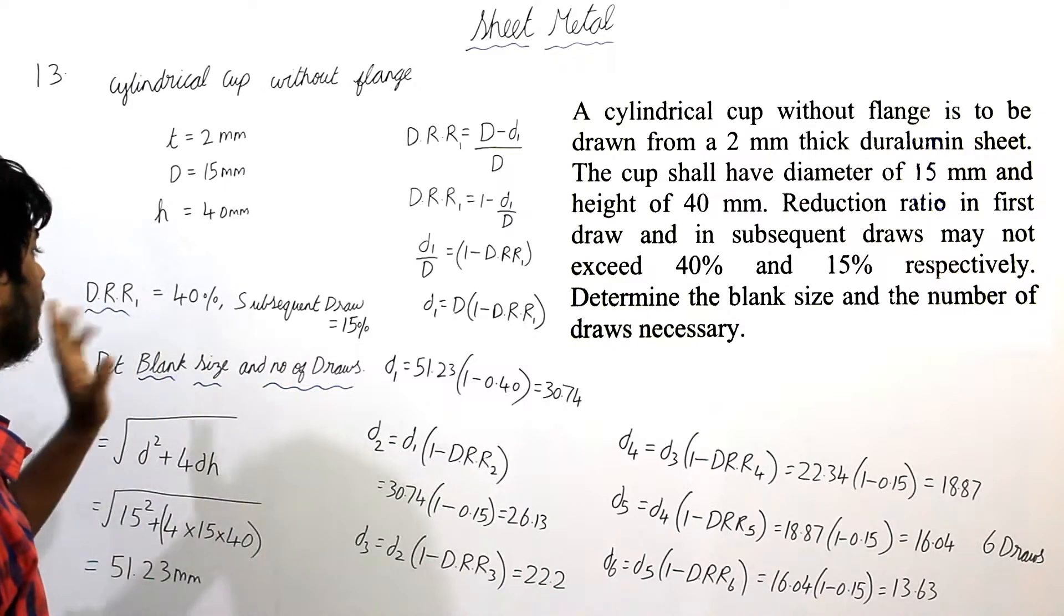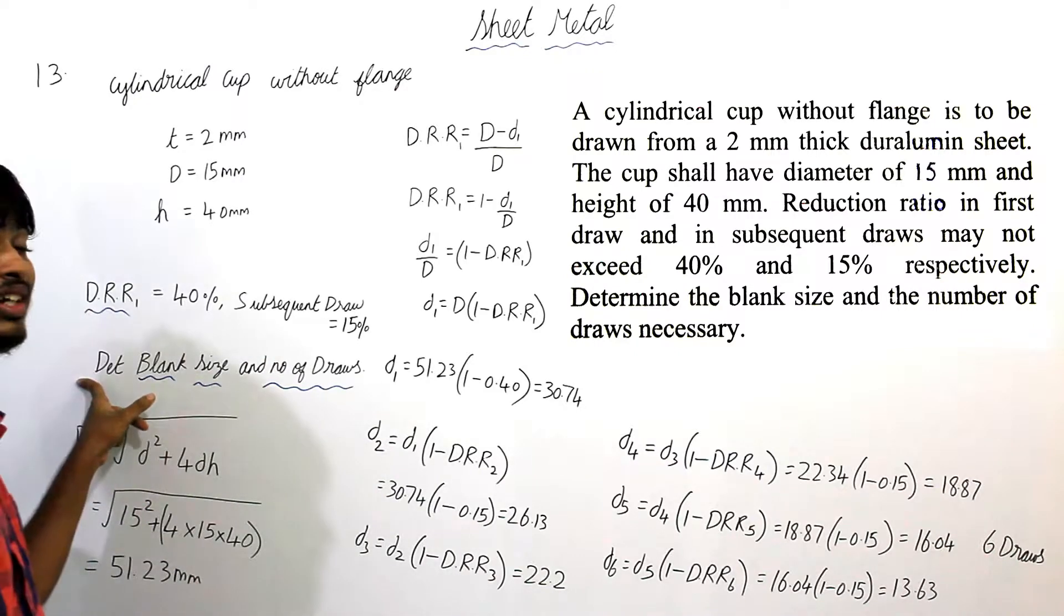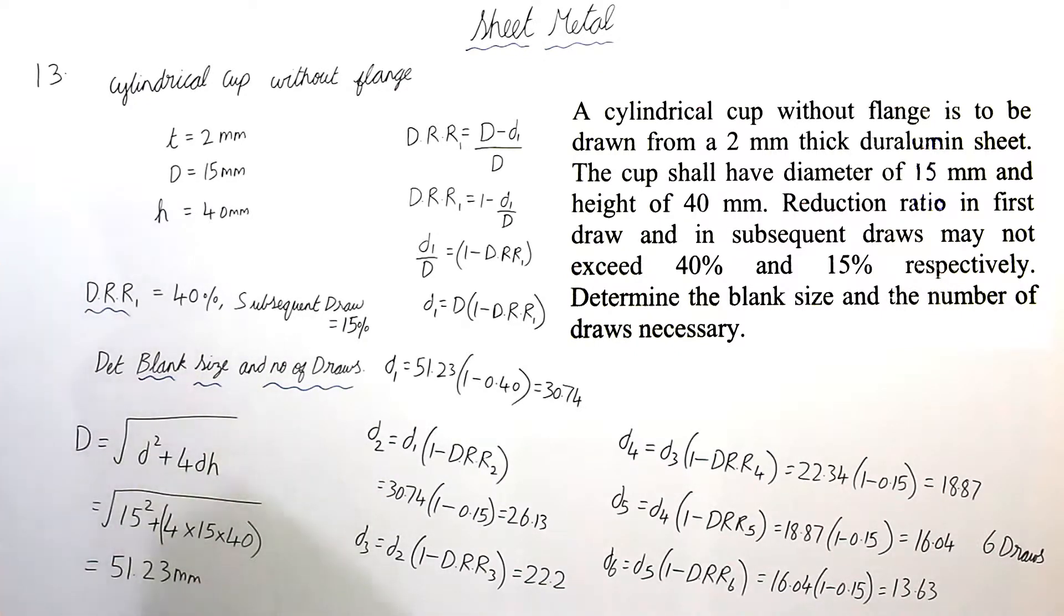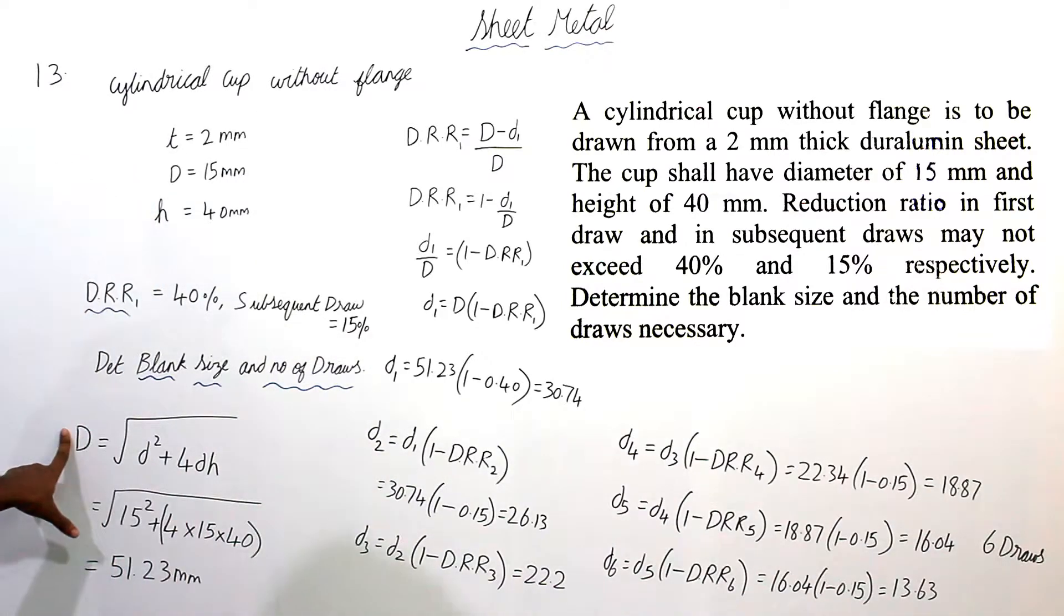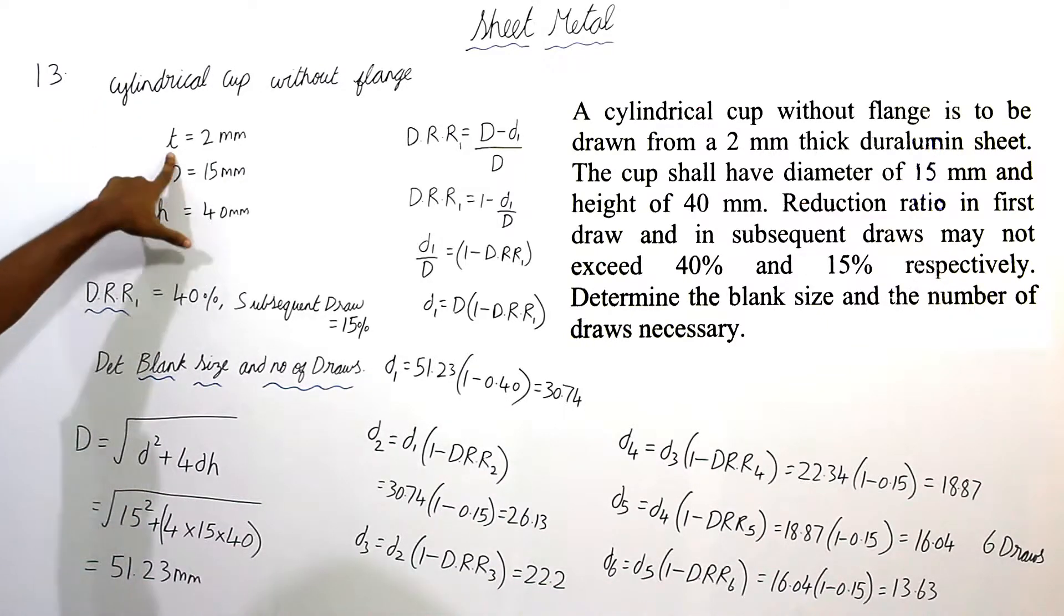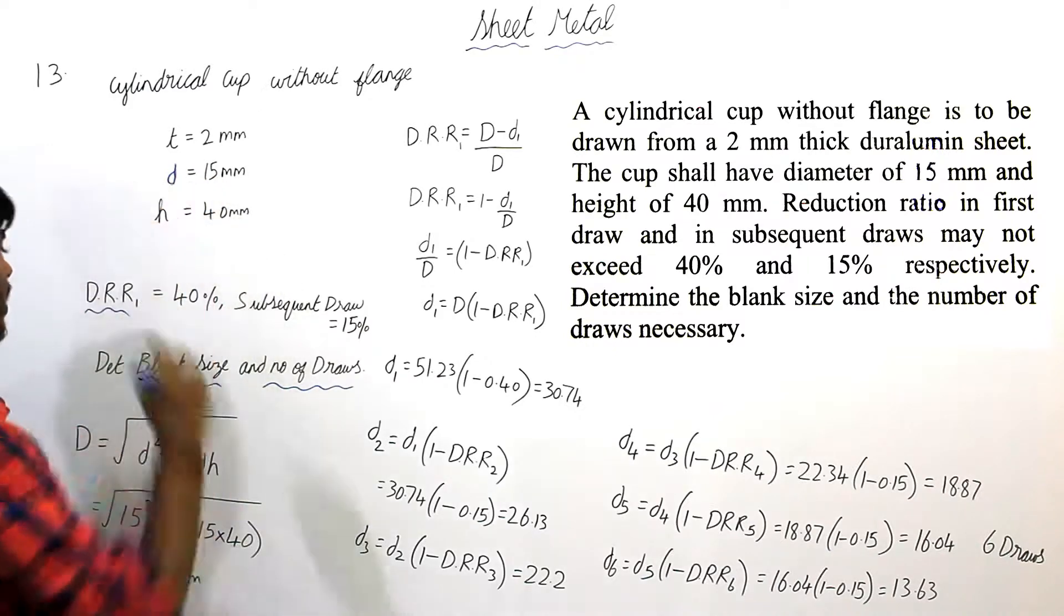First let us find this blank size. Blank size is nothing but blank diameter. It is given as capital D is the root of small d square plus 4dH. This small d is the final diameter of this cylindrical cup shaped component. It is given as 15. This is actually small d, it is given as 15 mm.